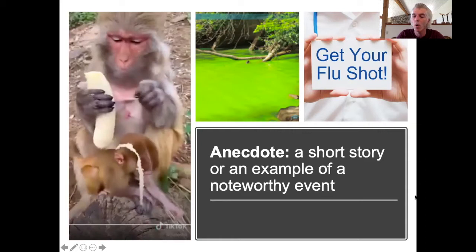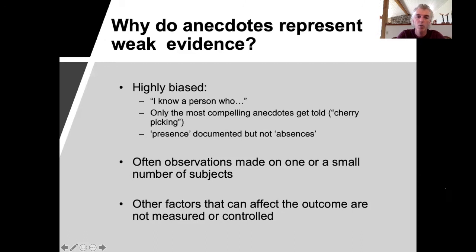So why is the anecdote a poor form of scientific evidence? Well, first of all, anecdotes are highly biased. We hear about the dramatic cases, the attention-grabbing cases, but we don't hear about the cases when nothing happened.